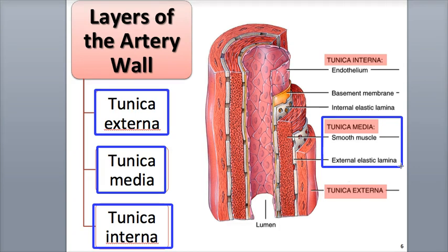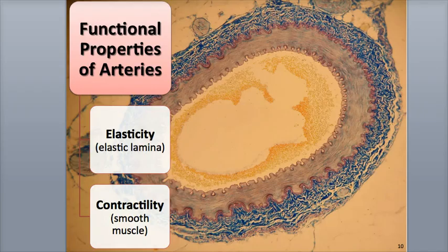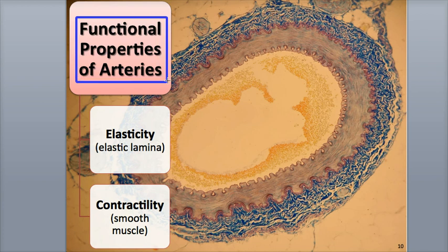Arteries also display a high level of compliance, meaning that they can expand or stretch without damage as high-pressure blood passes through them. It is the tunica media that provides the arteries with their major functional properties of elasticity through the elastic lamina with the elastic connective tissue.